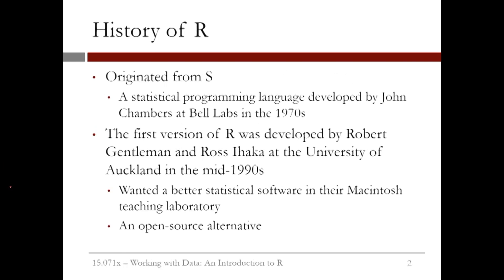R originated from the statistical programming language S, which was developed by John Chambers while at Bell Labs in the 1970s. The first version of R was developed by Robert Gentleman and Ross Ihaka at the University of Auckland in the mid-1990s. They wanted better statistical software to use in their Macintosh teaching laboratory.